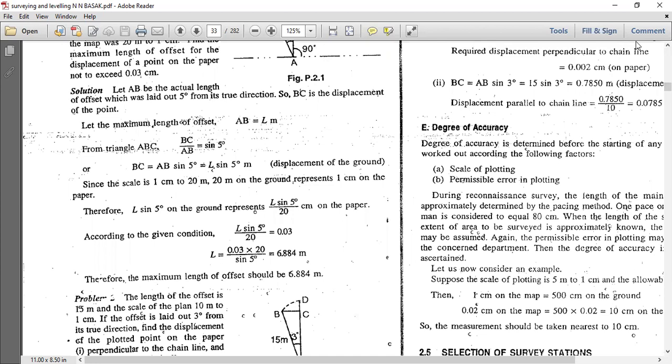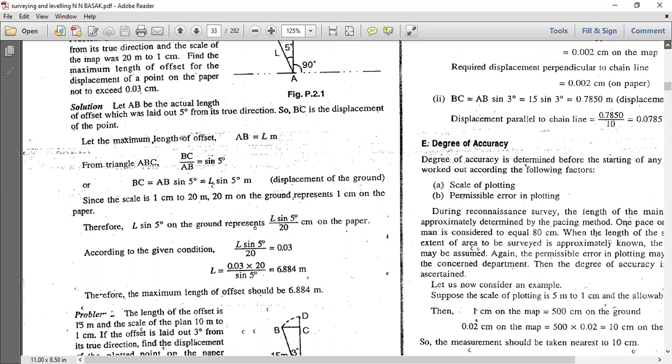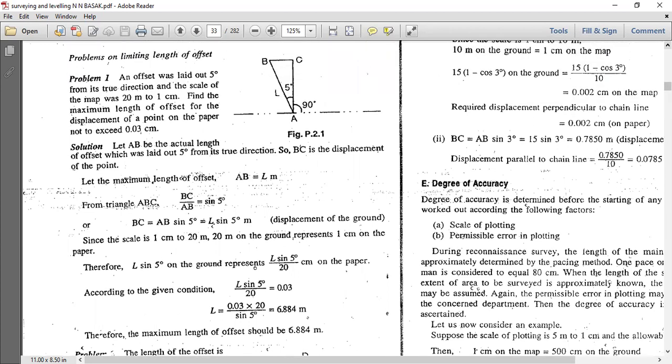I will solve here only one problem. The second problem you guys will solve, okay? So see, this is problem number one we are going to discuss. An object was laid out 5 degrees from the true direction and the scale of the map was